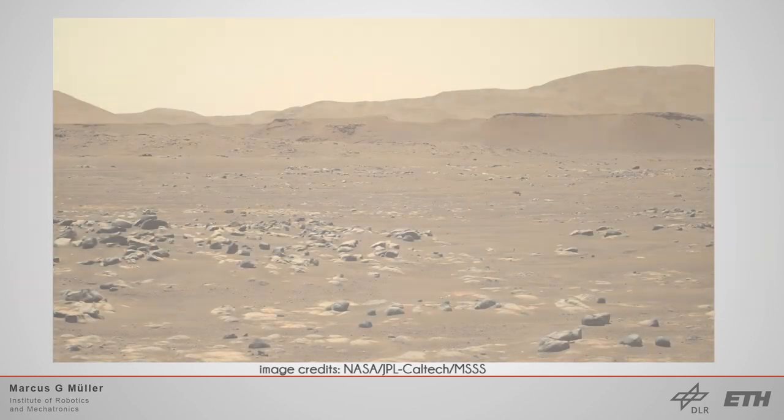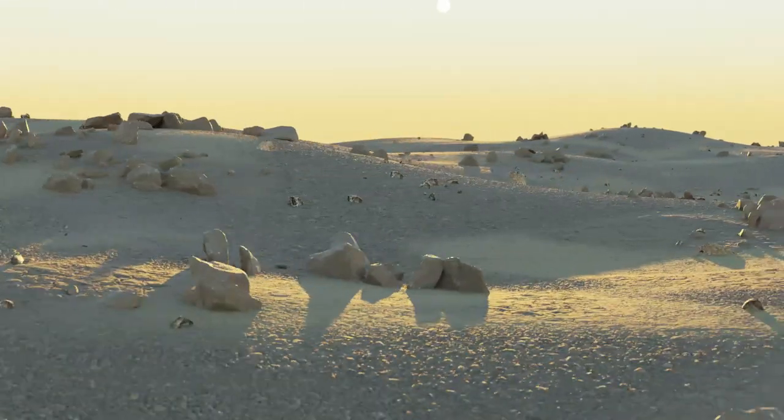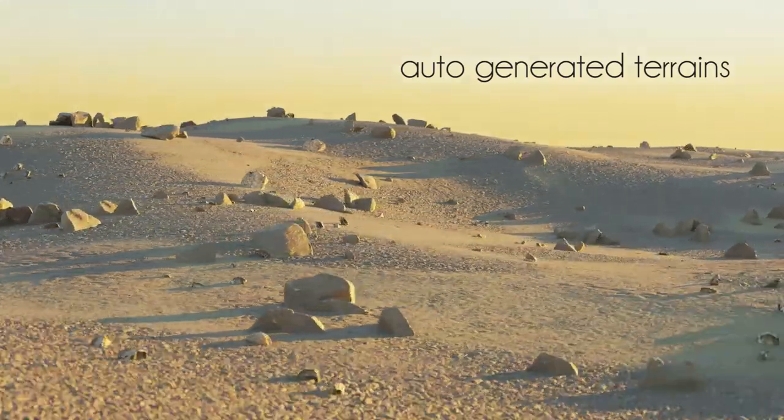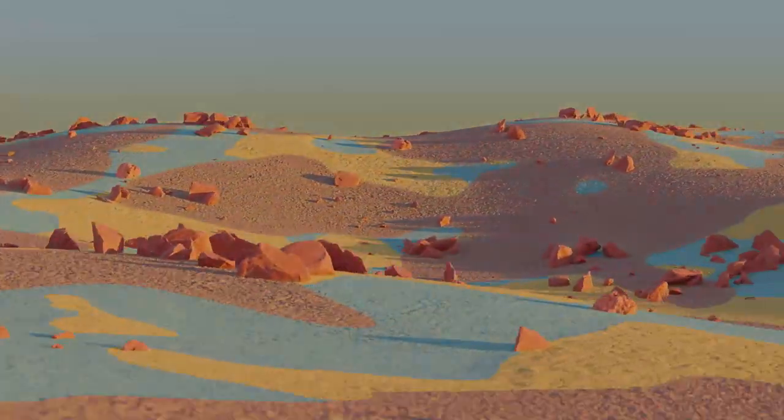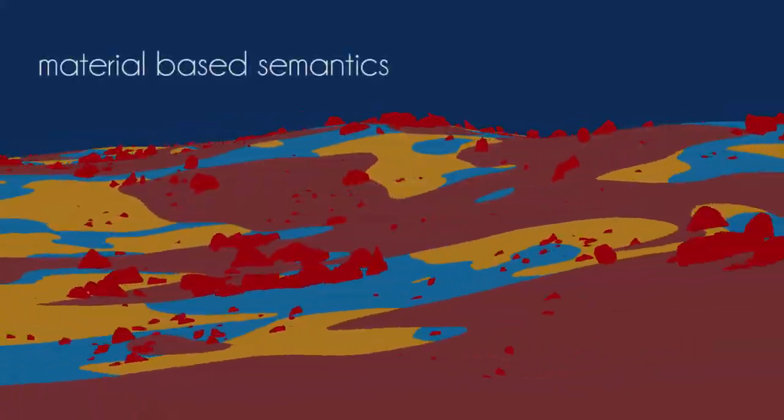For unstructured environments and in particular for planetary environments, the amount of simulators which create photorealistic images is rather low. This is the reason why we developed OASIS, a simulation pipeline for unstructured outdoor environments based on Blender. OASIS can auto-generate different terrains and gives many semantic output options due to its material-based semantic labeling technique.